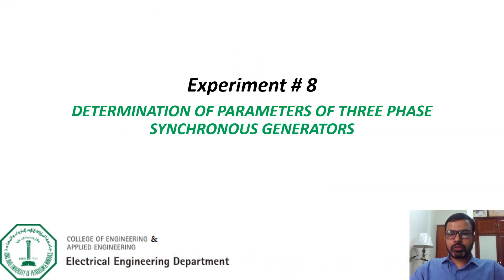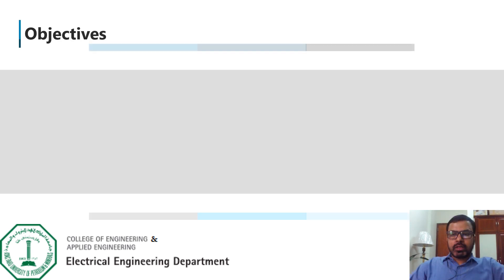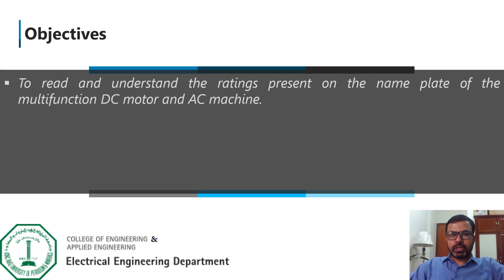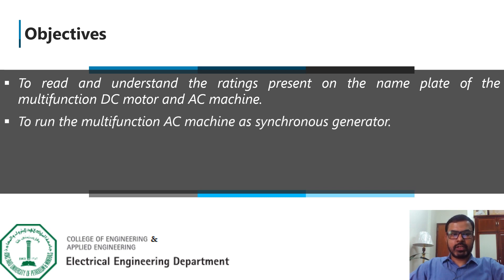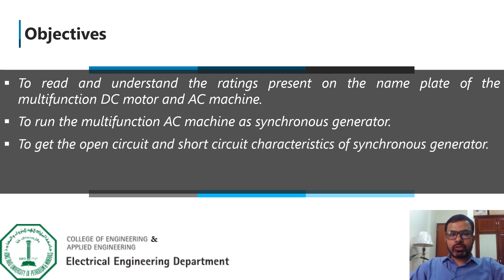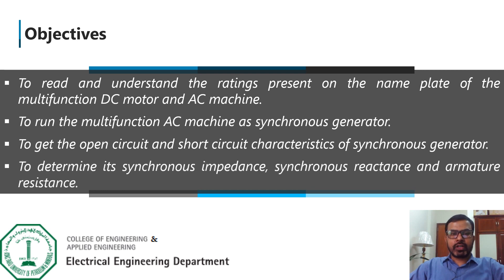Hello everyone. Our today's demonstration is on experiment number 8, where we will determine the parameters of three-phase synchronous generators. The objectives are to read and understand the nameplate data of the DC multifunction motor and AC multifunction machine, to run the AC machine as synchronous generator, to get the open-circuit and short-circuit characteristics, and finally to determine the synchronous impedance, synchronous reactance, and armature resistance of the synchronous generator.